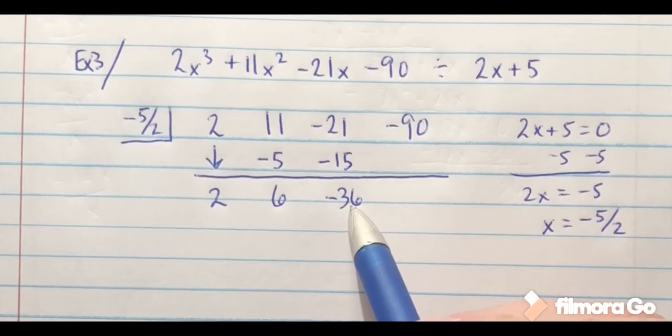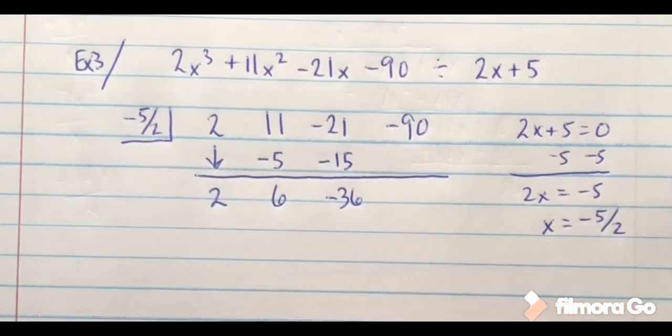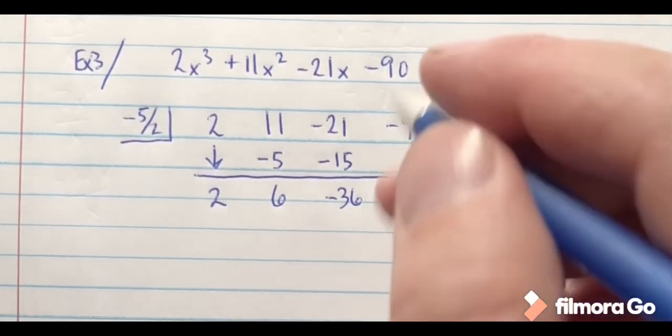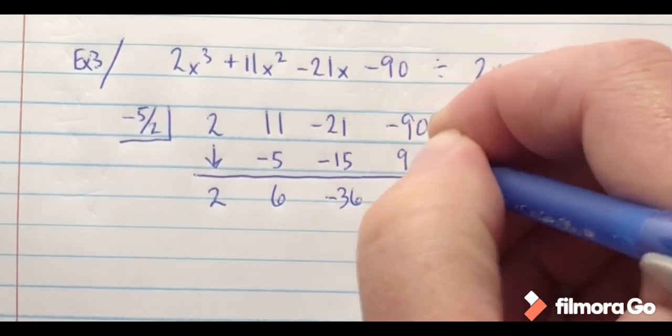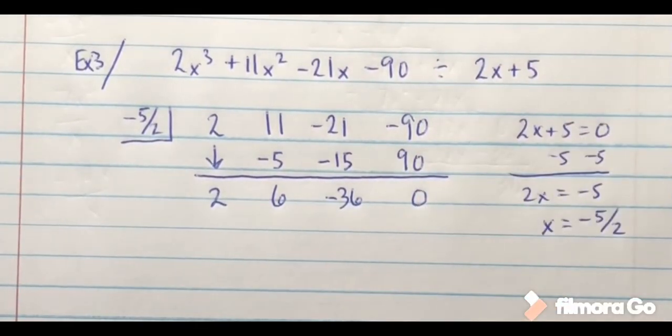If I then take negative 36 times negative 5 halves, that's going to give me positive 90, and that's going to give me a remainder then of 0.